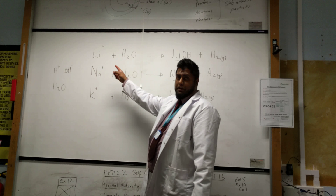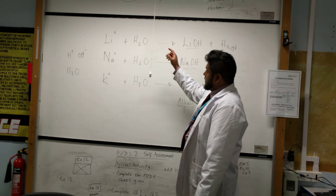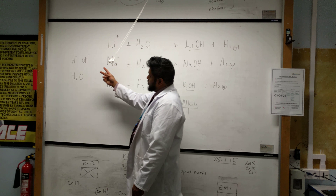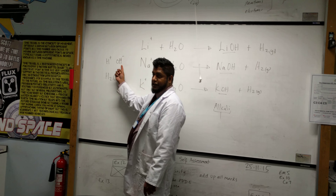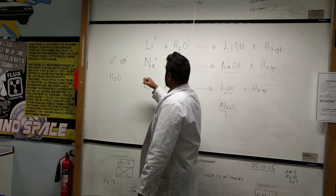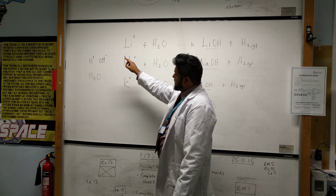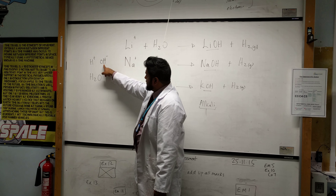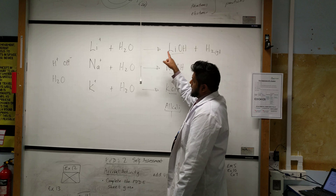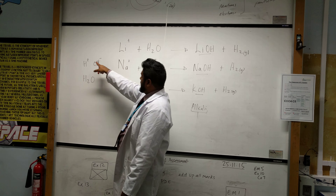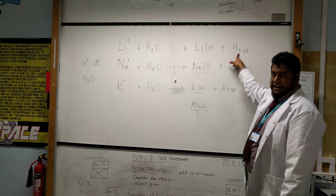If we take lithium and react it with water, the water — which consists of hydrogen and hydroxide ions — is split, and then the lithium combines with the hydroxide ion to form lithium hydroxide, and the hydrogen that's left over is liberated as hydrogen gas.